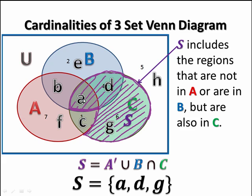Because the region a is in B and it's in C. The region d is in B and it's in C. The region g, it is not in A, but it is in C.